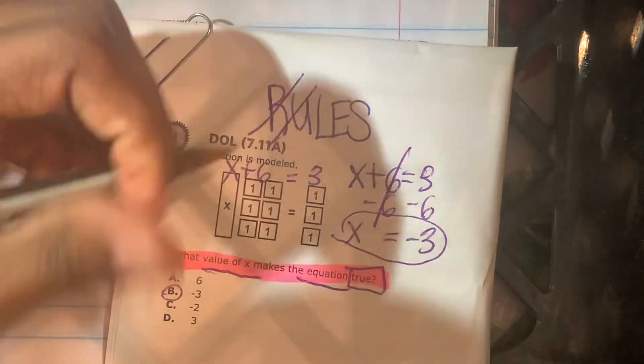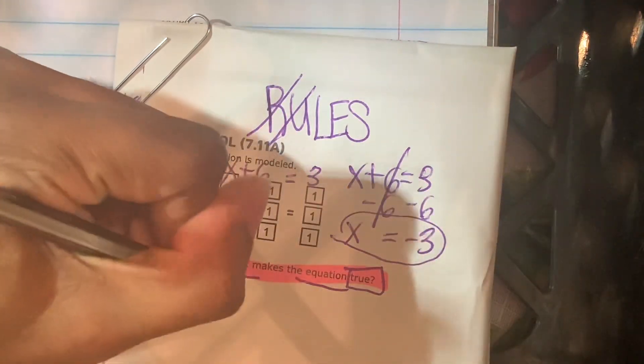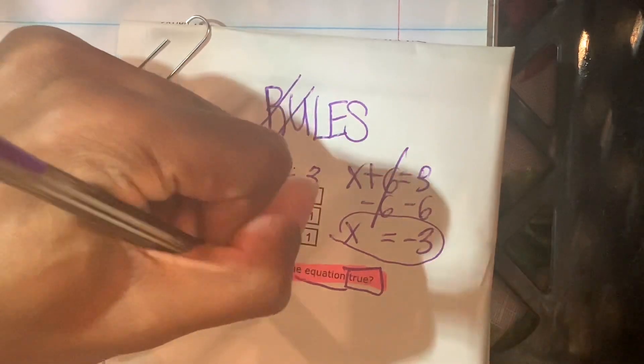Now I'm going to double check this by plugging negative 3 into the original equation. Remember our original equation, x plus 6 is equal to 3?